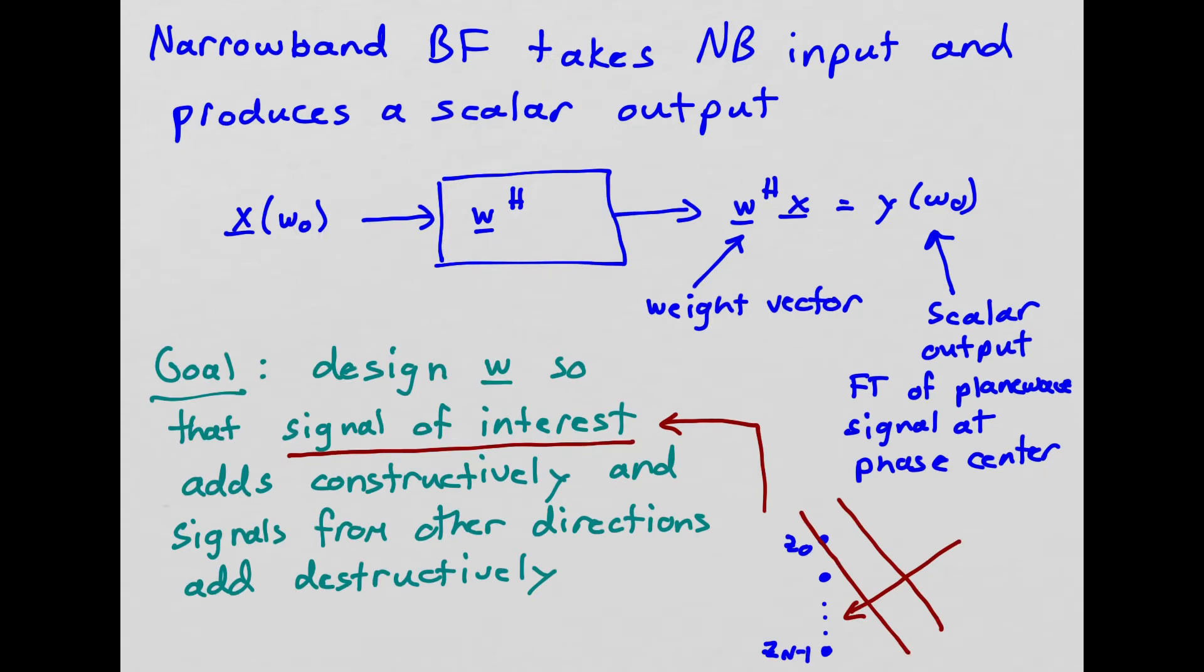Our narrowband beamformer takes the narrowband input vector x and produces a scalar output y. It does this by processing the data with a spatial filter defined by a weight vector w. Specifically, it computes the inner product of the weight vector w with the measurement vector x. So that inner product is w hermitian x where the hermitian represents the conjugate transpose. And that scalar output represents the Fourier transform of the plane wave signal that we're looking for at the phase center of the array.